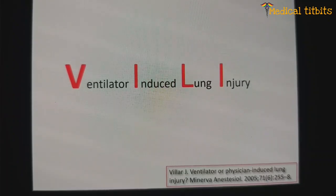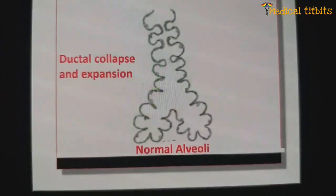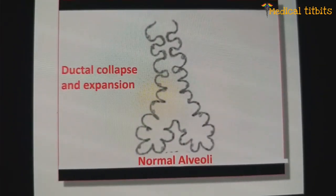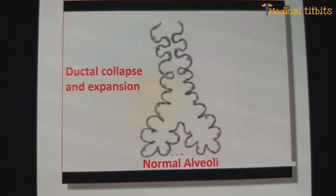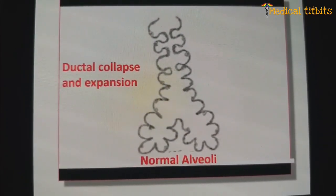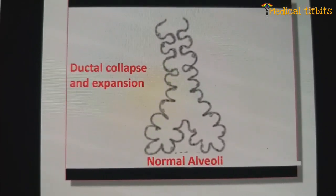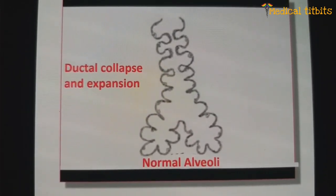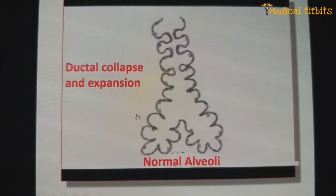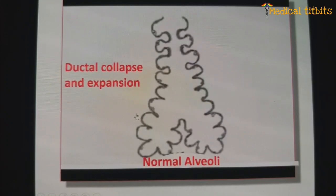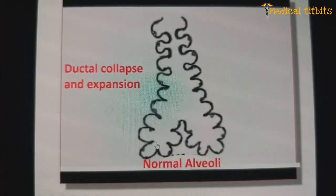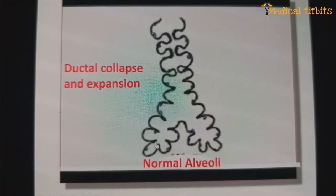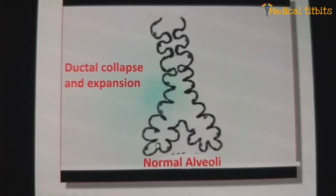What is VILI? When we discuss the physiology of lung expansion, we tend to think there is alveolar collapse and expansion repeatedly. But no — usually there is expansion and collapse of the alveolar duct, not the alveolus. Alveoli tend to retain their size and shape during normal breathing pattern.